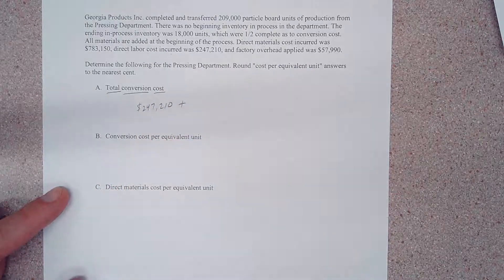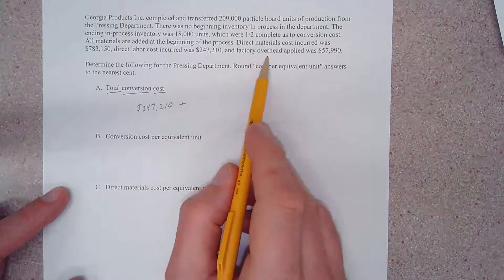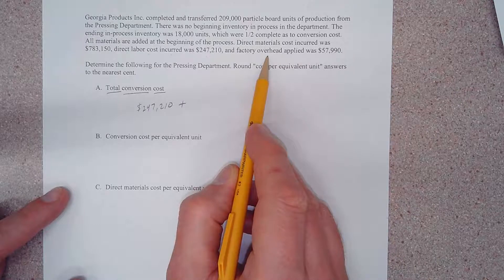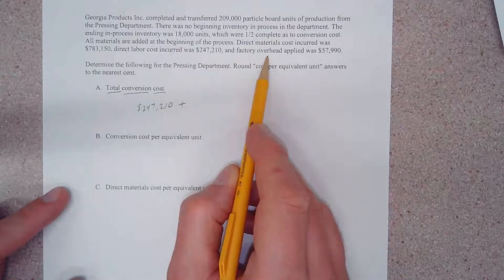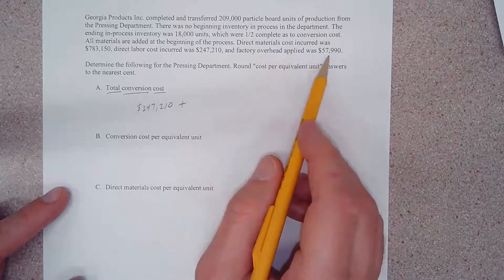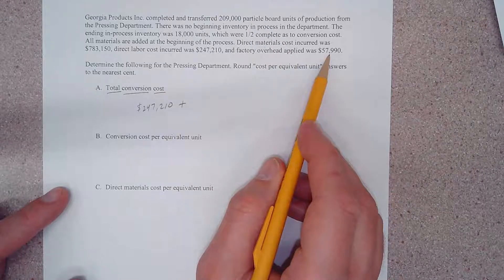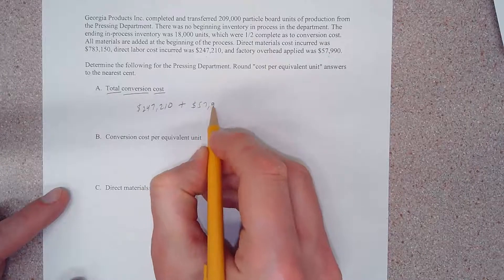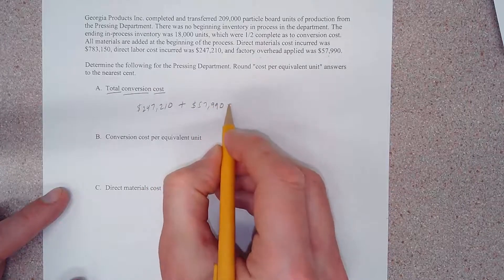Okay. Factory overhead is also converted into a product cost, and in this case we have factory overhead applied of $57,990.